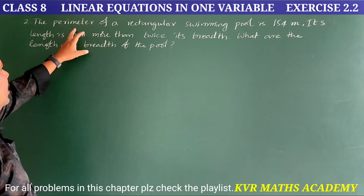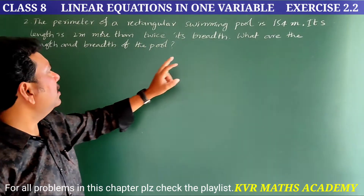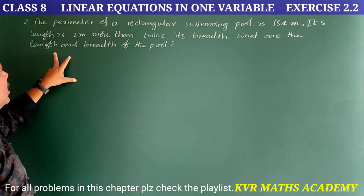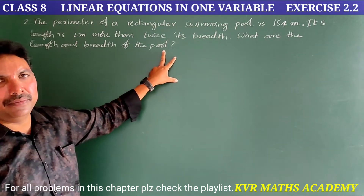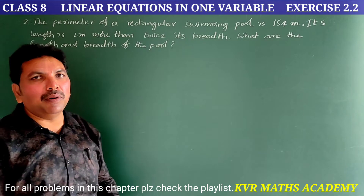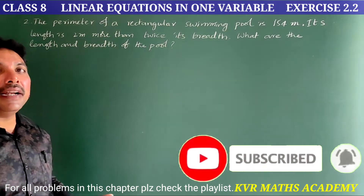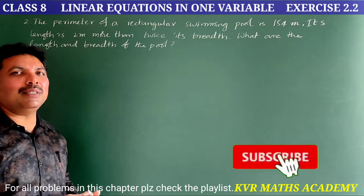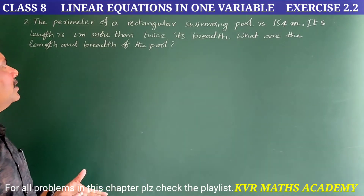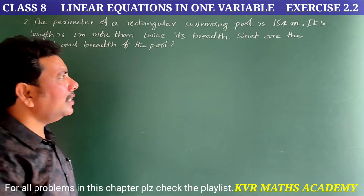Next, second question. The perimeter of a rectangular swimming pool is 154 meters. Its length is 2 meters more than twice its breadth. What are the length and breadth of the pool? We have to find both.